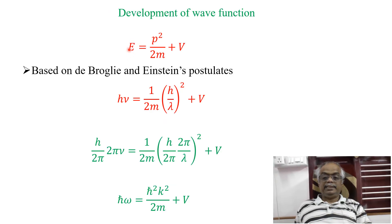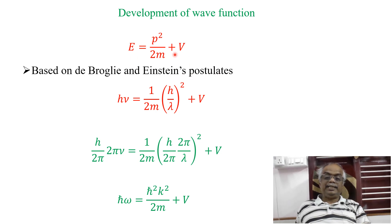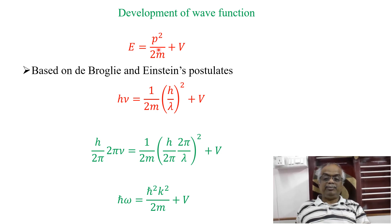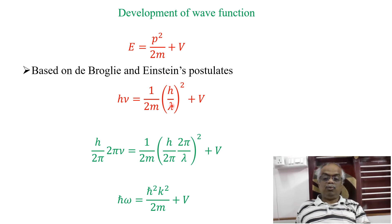We have seen that E is equal to p squared over 2m plus V. Based on de Broglie and Einstein's postulates, we can rewrite. According to Einstein, E is equal to h nu, and this can be written as p squared over 2m — taking 1 over 2m out. And according to de Broglie's hypothesis, p is equal to h-cross over lambda. So, I am rewriting p squared as (h-cross over lambda) whole squared, plus V.